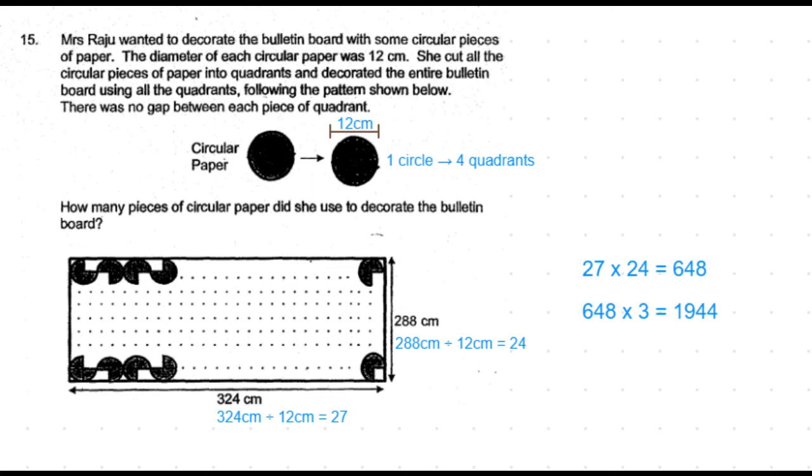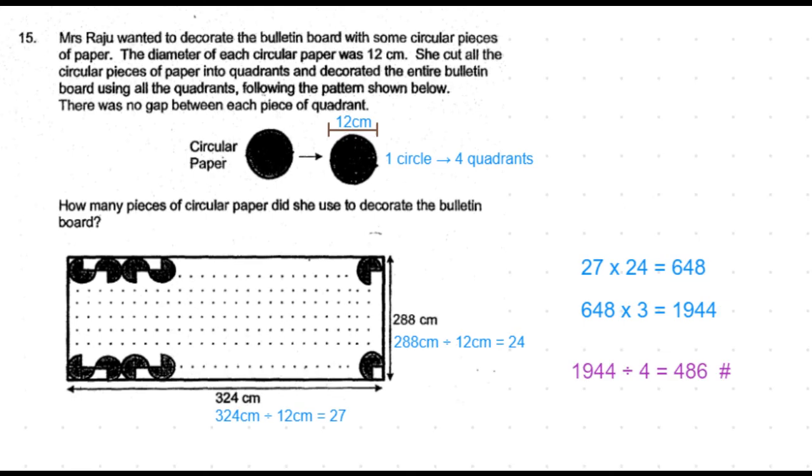So, to make a total of 1944 quadrants, we will need 1944 divided by 4 equal to 486 full circles. So, Mrs. Raju would use 486 pieces of circular papers.